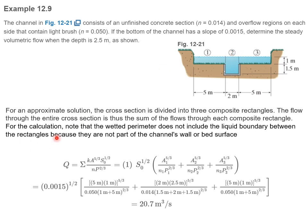For an approximate solution, the cross section can be divided into three composite rectangles. Here's one rectangle, another rectangle, and the third rectangle. The flow through each cross section is thus the sum of the flows through each composite rectangle. Also notice for the calculation that the wetted perimeter does not include the liquid boundary between the rectangles. In other words, this boundary or that boundary is not included because they are not part of the channel's wall or bed surface. We can write Q as the sum of each rectangle, of all those rectangle areas and parameters. S0 is the same because the slope is the same. So we can factor that out. We're dealing with meters, the metric system, our k value is 1. That's where the 1 comes from.